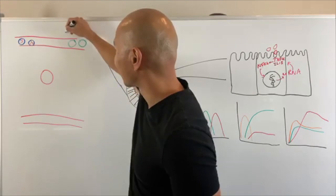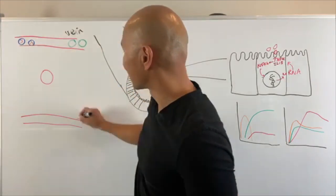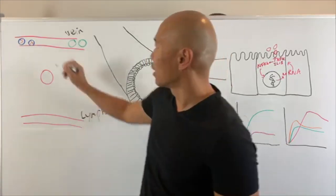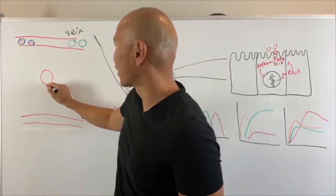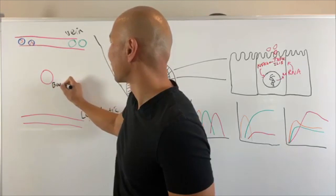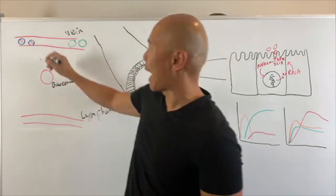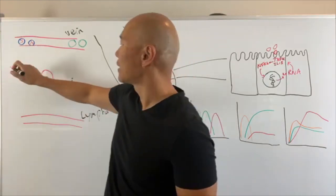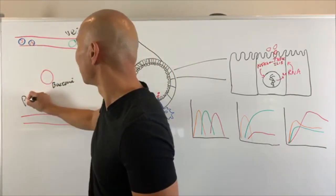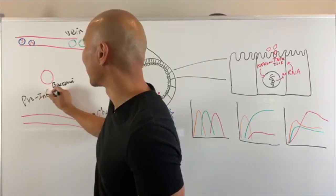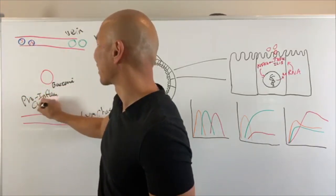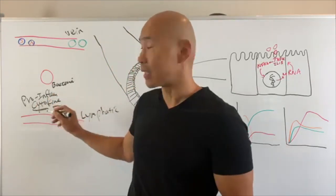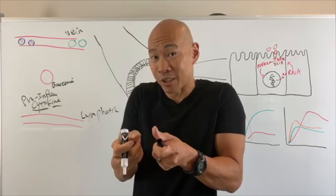So here we have blood vessels — this is like a vein — and this is your lymphatic system. And here we have a bacteria. So when your body senses a bacteria, it sends out these pro-inflammatory cytokines. Cyto means cell, kine means messenger. This is how your immune system sends text messages to each other.